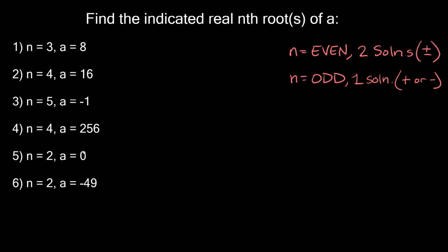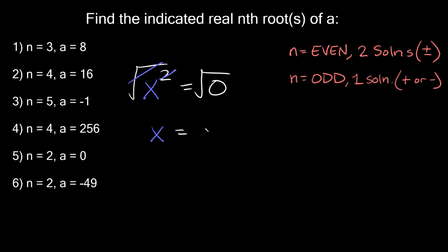Number 5 is a special case: n is equal to 2 and a is equal to 0. So we have x squared equal to 0. We have an even exponent, so you'd think we'd have two solutions, but this is equal to 0 specifically. Taking the square root of both sides gives x equal to the square root of 0. You'd think plus or minus 0, but there's no such thing as positive or negative 0 — 0 is neither positive nor negative. So we only have one solution: x equals 0.